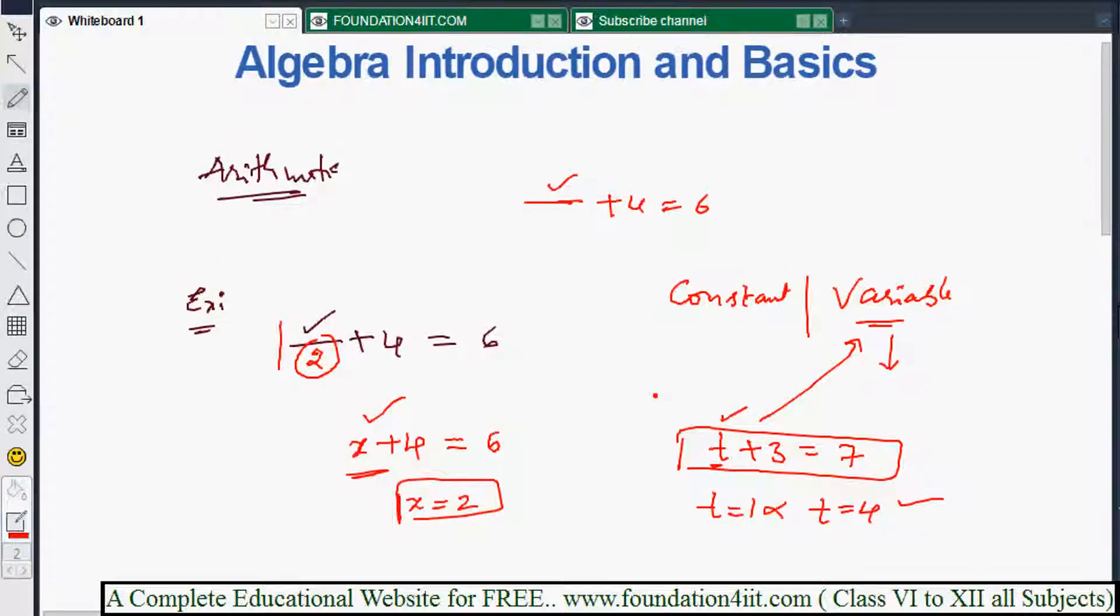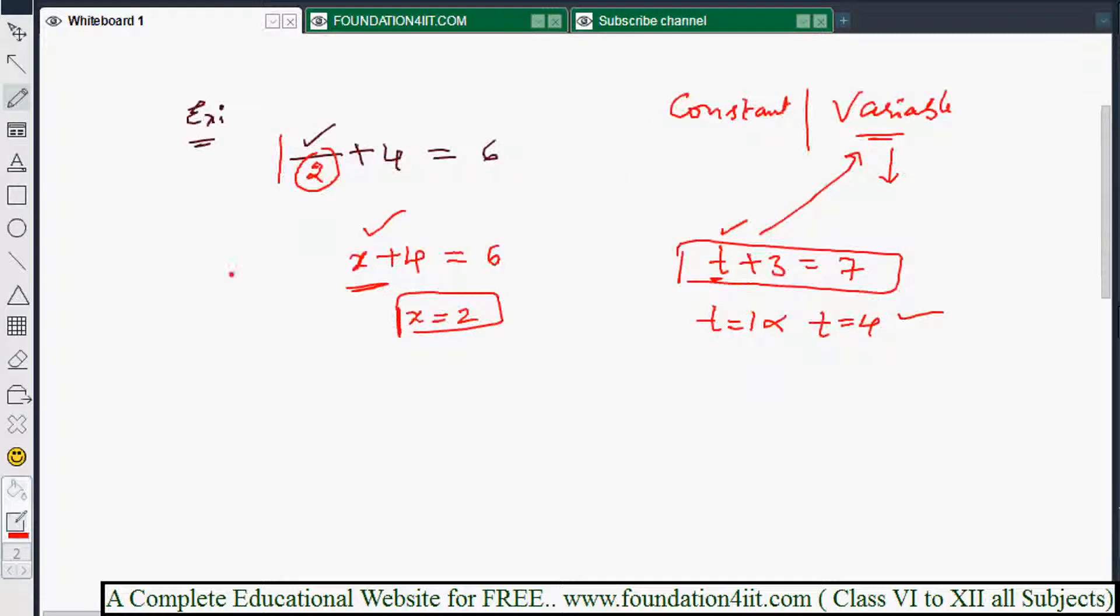That means we will find out unknown values using the main concept of algebra. Any values - not only plus, you can take multiplication also. For example, three into dash is 18. In this case, instead of giving gap, in the form of algebra we will write three into x. Three into x equals 18. For what value of x is that statement true?